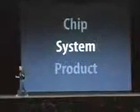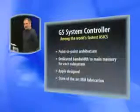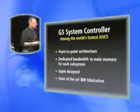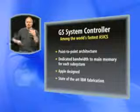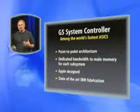So this is the chip. Now, let's build a system with it. We start off building a system, even before we get to the processor, with a chip that Apple designed. It's the G5 system controller, and it's among the world's fastest ASICs. It's got a point-to-point architecture, so there's no contention between the various things that want to send data around through the system. Dedicated bandwidth to main memory for each subsystem. We designed it, and IBM is fabricating it in the same state-of-the-art facility that's building the G5. So this is our system controller.